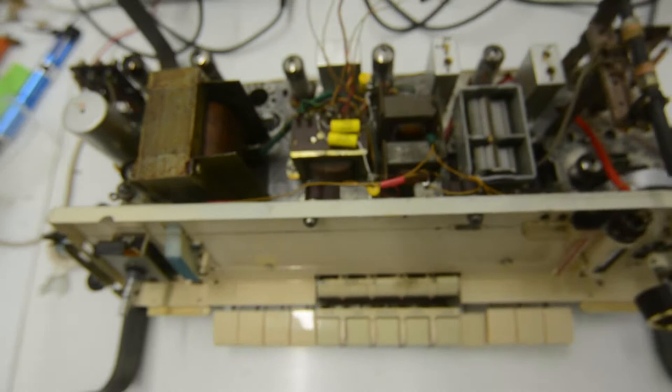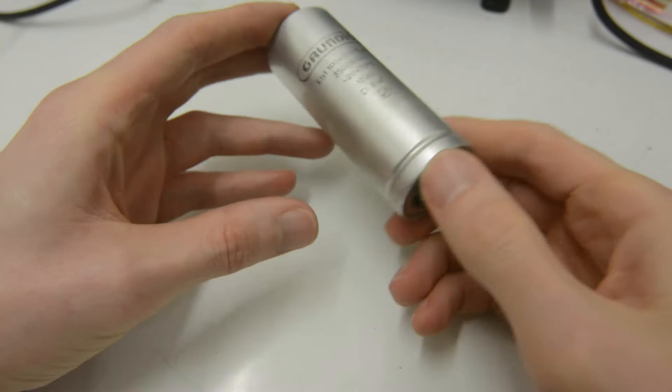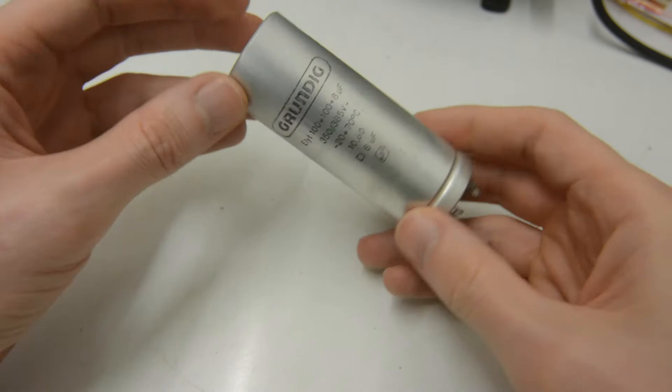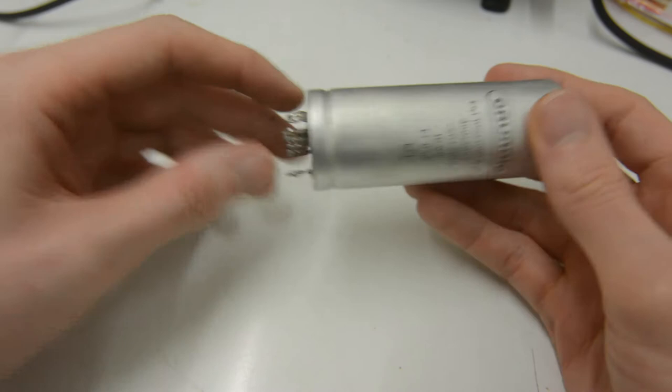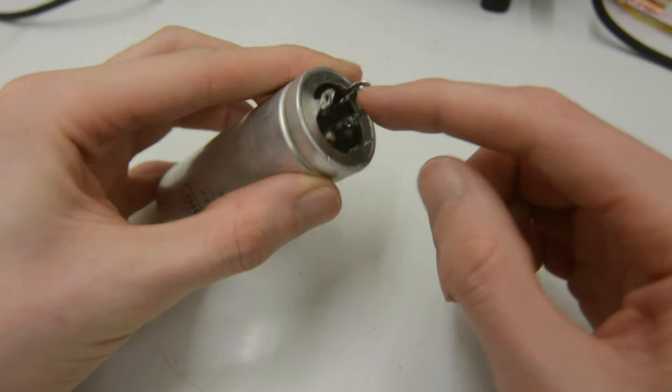Okay, so let's get started working on replacing this big one here now. I think that's the only cap that still needs to be changed on the radio. Okay, so I got the filter can out of the chassis, which was quite a challenge actually. It was quite stuck in there. It was very well fixed in there.